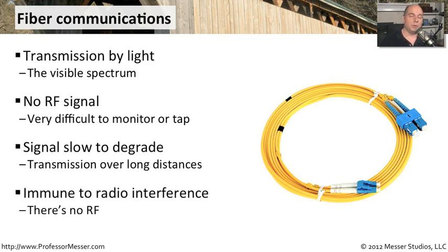Fiber is also immune to any type of radio interference — interference that might be coming from microwaves, wireless networks, or your cell phone. None of that has any impact on a fiber connection, because it's light going from one side to the other. These are great for environments that might be electrically noisy, like a manufacturing environment with a lot of radio signals. Those are perfect environments to use a fiber network connection.